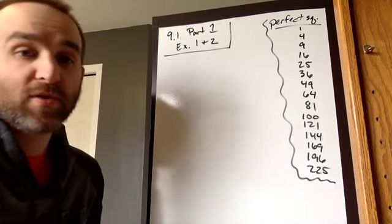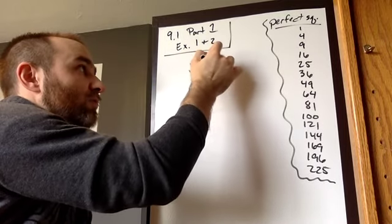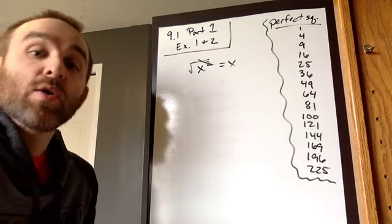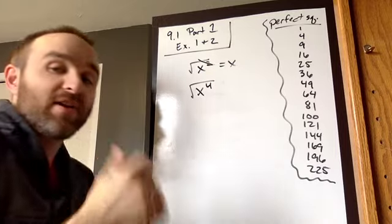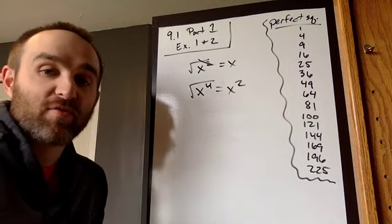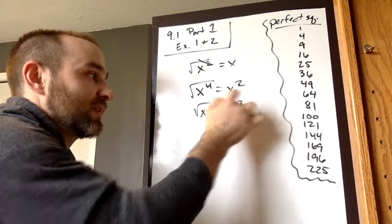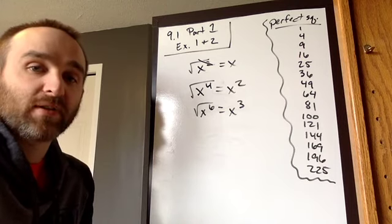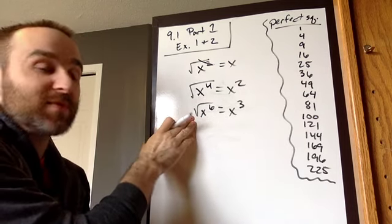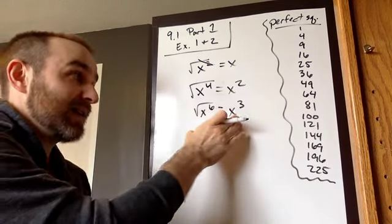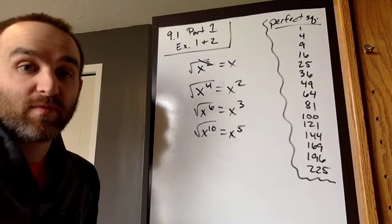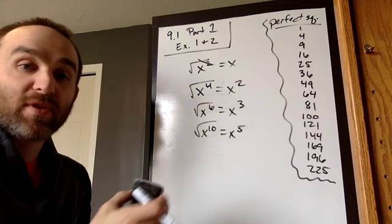Let's look at variables now, because we've got to be able to do this with variables too. We know the square root of x squared is x — those two things cancel each other out. When we take the square root of a variable, anytime the exponent is an even number, all we have to do is cut it in half. The square root of x to the fourth is x squared. The square root of x to the sixth is x to the third. We're cutting that exponent exactly in half, because x to the third times x to the third gives me x to the sixth. The square root of x to the tenth gives me x to the fifth. Pretty easy when they're even.